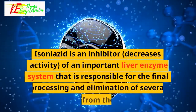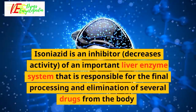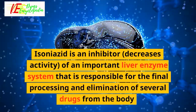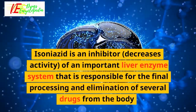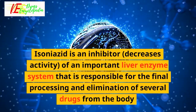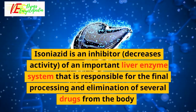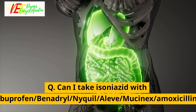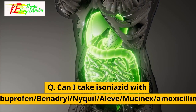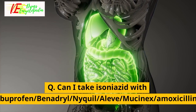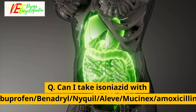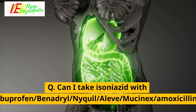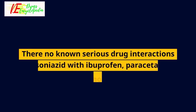Q: Is isoniazid an inducer or inhibitor? Isoniazid is an inhibitor — it decreases the activity of an important liver enzyme system that is responsible for the final processing and elimination of several drugs from the body. Q: Can I take isoniazid with ibuprofen, Benadryl, NyQuil, Aleve, Mucinex, or amoxicillin?